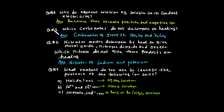Question 5: Which carbonates do not decompose on heating? Group 1 carbonates are thermally stable and do not decompose on heating. Examples include sodium carbonate and potassium carbonate, which are stable and do not decompose at high temperatures.